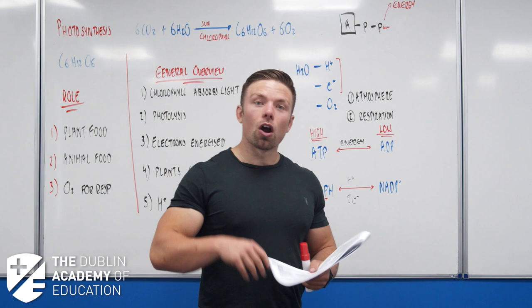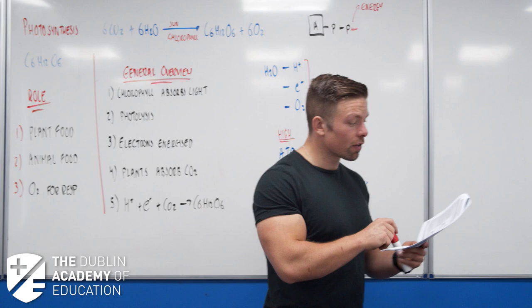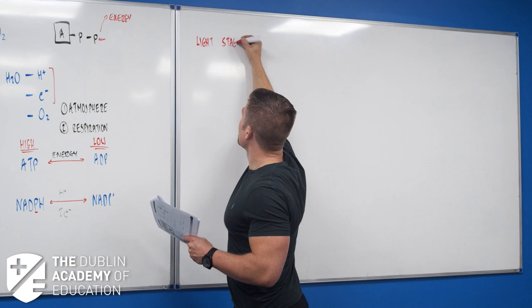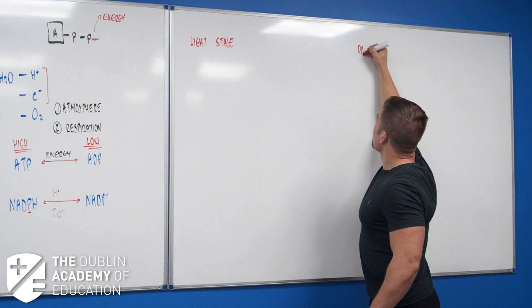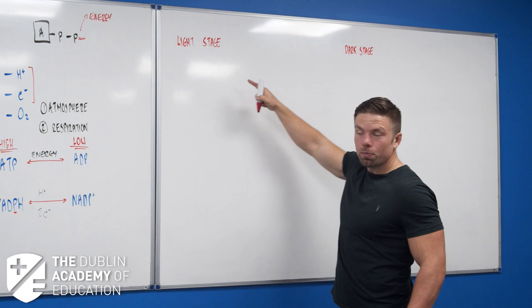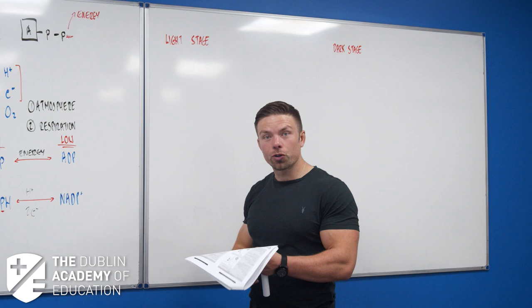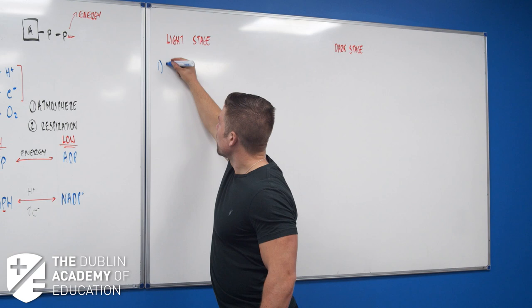Now we're into our final idea for photosynthesis: the light stage and the dark stage. We're only going to look at the detailed study if the examiner specifically asks. The light stage needs light because of photolysis. The dark stage doesn't need light - it's often called the light independent stage; it just doesn't need light.